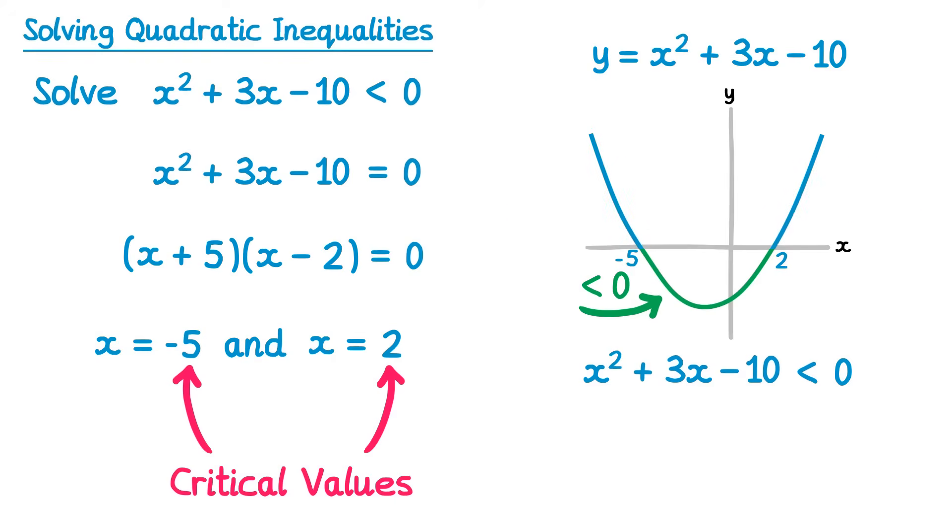To solve this inequality then, we want to know the x values that give this green section. So that's all of the values marked here by the pink arrow, so in between negative 5 and 2. We can write that down as an inequality, x is in between negative 5 and 2. Notice both of the inequality signs point to the left. And that's the answer to this inequality.